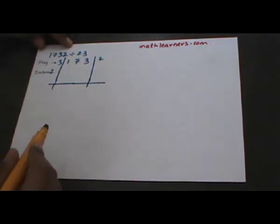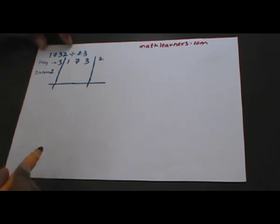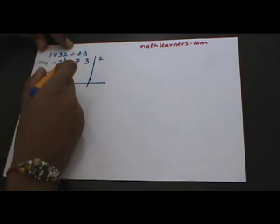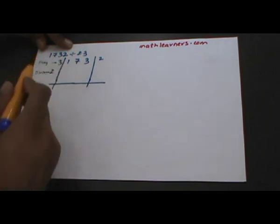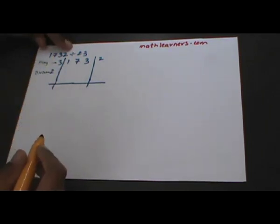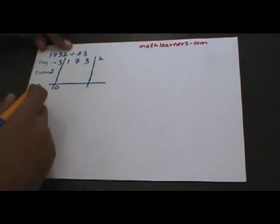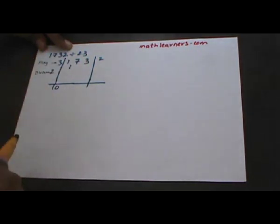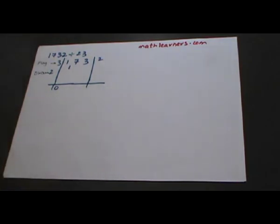From now onwards 2 will be acting as our divisor. The first digit is 1; 1 will be divided by our new divisor that is 2. When 1 is divided by 2 we get quotient as 0 and remainder as 1. The quotient is written under the horizontal line and the remainder will be written under 1 and 7, in between them.